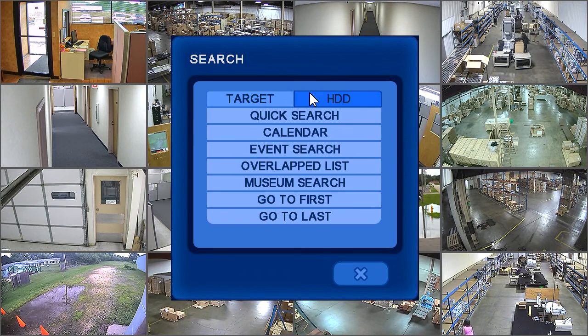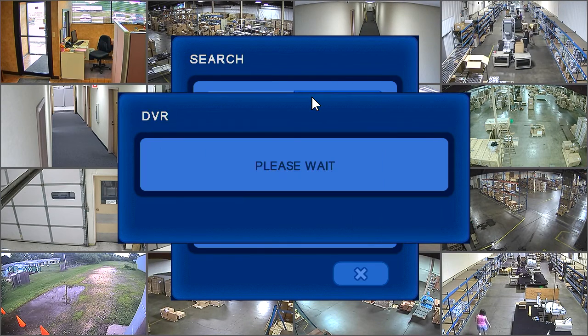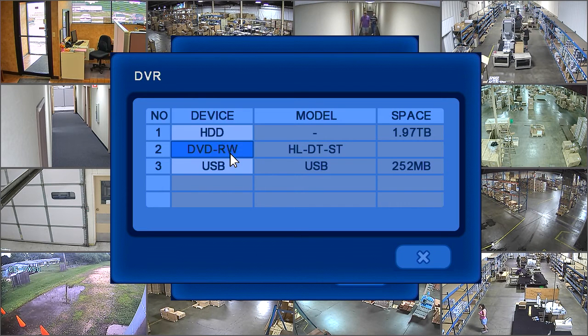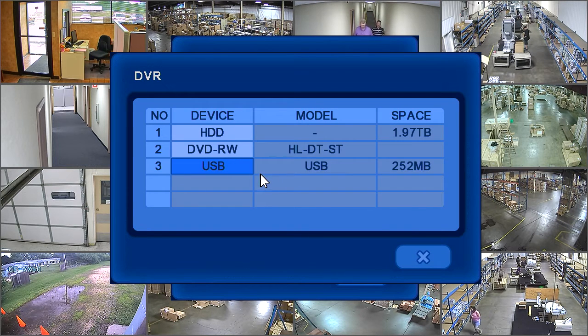Typically you will be searching from the hard drive on the DVR, but if a USB device or disc with recorded video is inserted into the DVR, you can search from those as well.